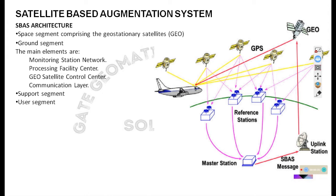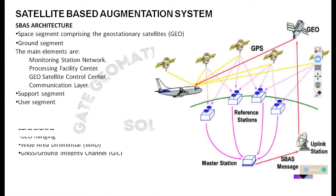The ground segment also includes an uplink station, a satellite control station, and a communication layer. There are various signals which comprise the S-BAS system. One is georanging, which includes transmission of satellite signals to users like the L1 signal from GPS. Another is wide area differential, which mainly involves calculating various correction information. The third is the ground integrity channel, which integrates and informs users of the safest navigation services. This is all about the satellite based augmentation system, mainly for aircraft positioning and navigation.